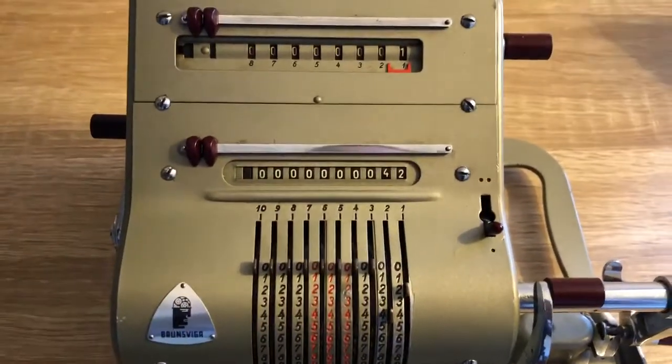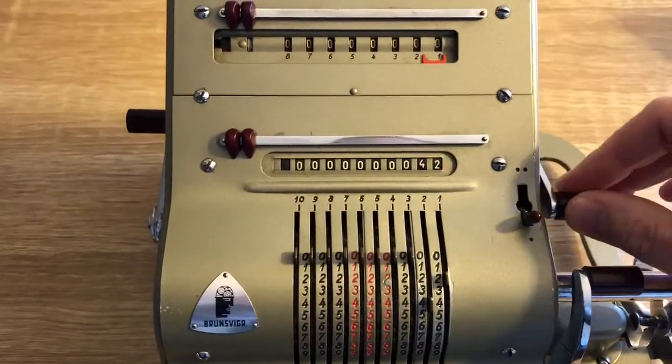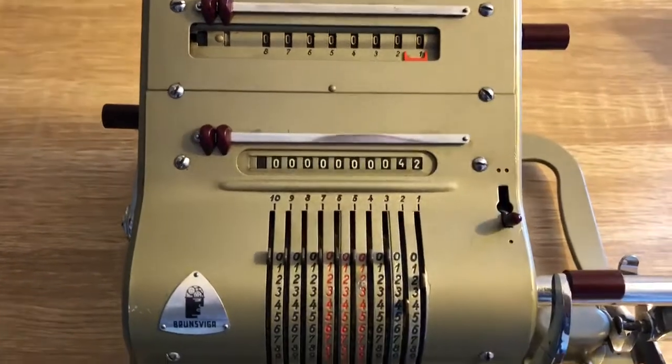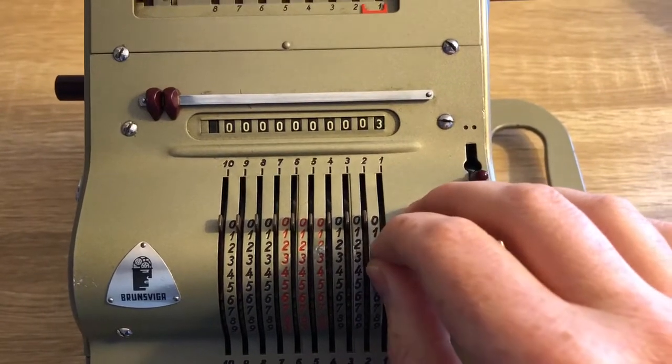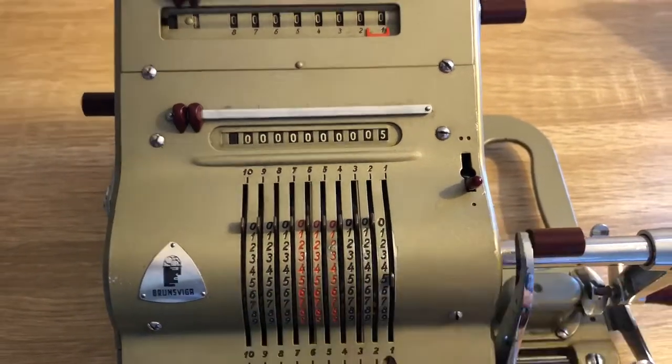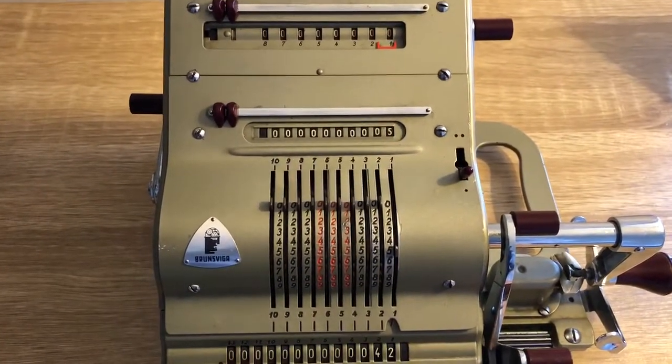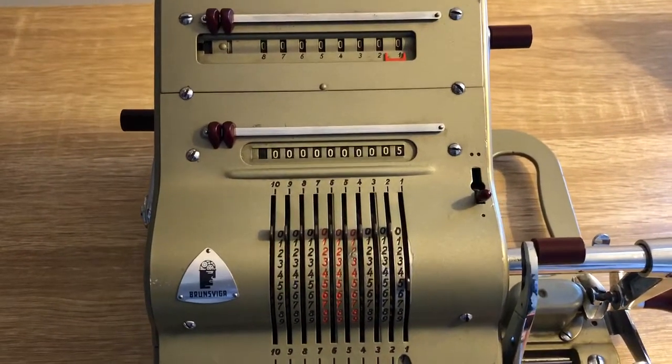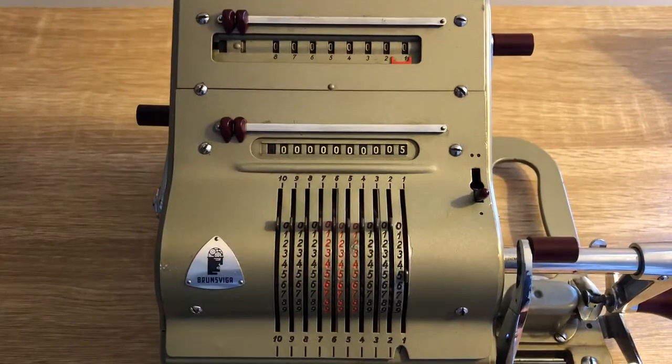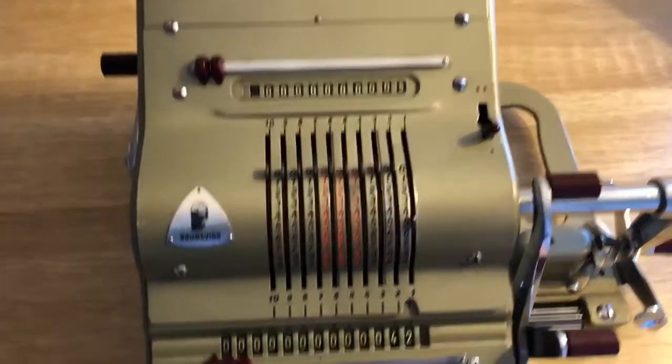Now for division I'm going to first of all clear our register there. And we're going to do something which is possible now. So 42 divided by 5. So I'm going to put 5 in there. And for completeness I'm first of all going to try dividing it into the tens column. As we'll see of course it won't go. So it's going to ring a bell and then we'll sort of go on from there.